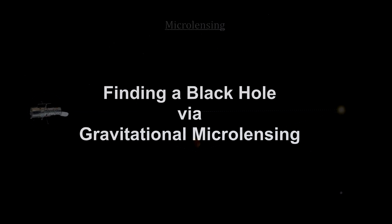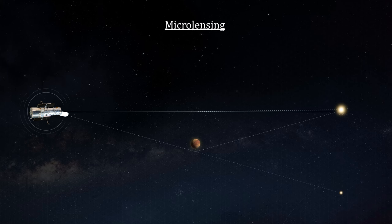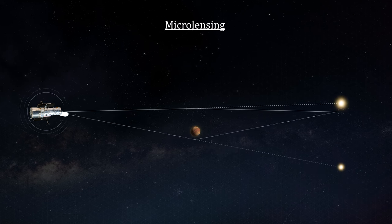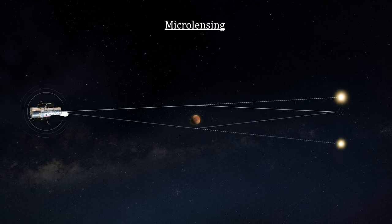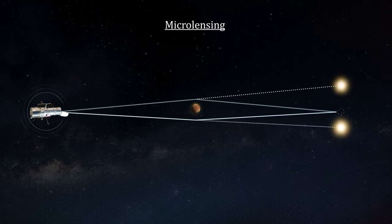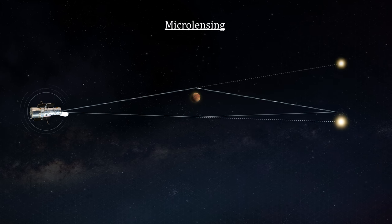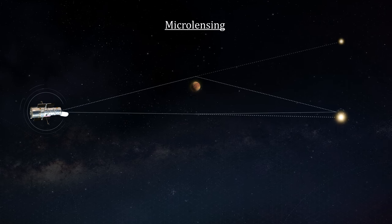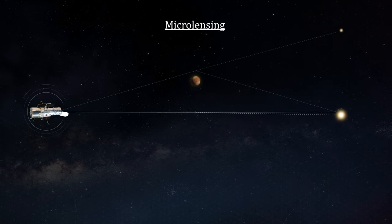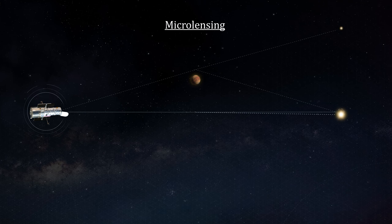Another way to detect a black hole is to find one distorting the image of a celestial object behind it. In our previous chapter on gravitational lensing, the lenses were mostly galaxy clusters and galaxy superclusters. But even a single planet can act as a lens, bending and magnifying light from objects behind it. These are microlenses, and analyzing their lensing effects is referred to as microlensing.